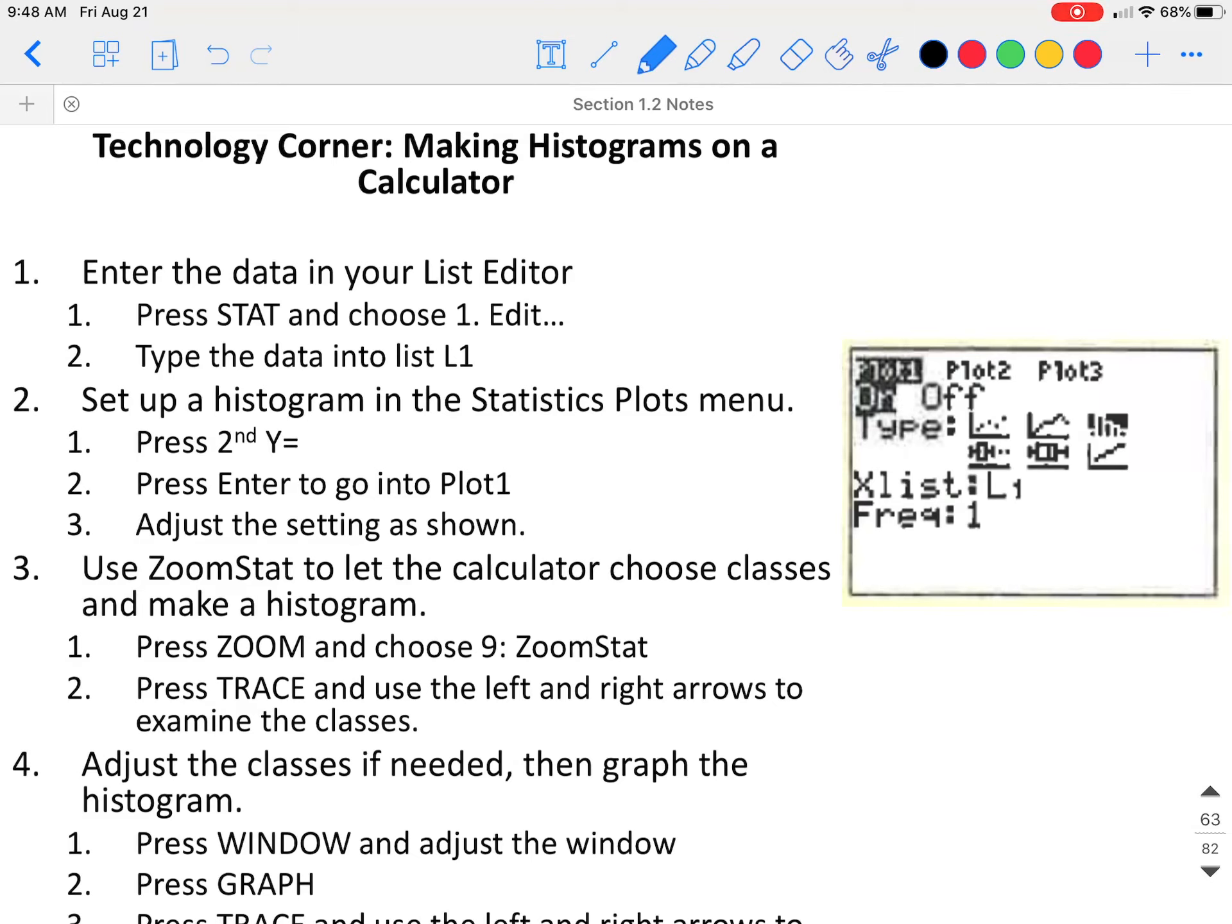To set up a histogram in the statistical plots menu, the first thing you should do is go to your y equals. Make sure you have no equations in there. Then you would hit second y equals. Press enter to go into plot one. You want to make sure that it is turned on.